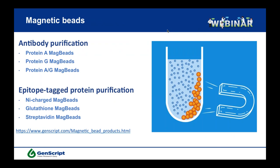Finally, we have magnetic beads — products for quick protein purification with large volumes or when you have a large number of samples with high-throughput purification needs. Magnetic beads are available for protein A, protein G, and combined protein A and G for antibody purification. We also have nickel-charged MAG beads for His-tag protein purification, as well as glutathione MAG beads and streptavidin MAG beads. For more information on these products, the links are given on the slide.